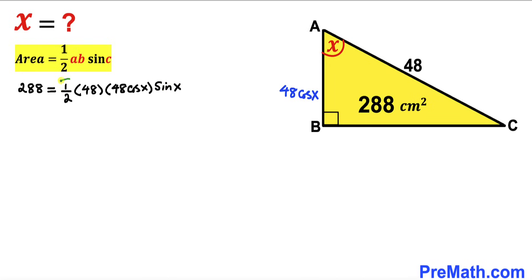Now we can see that one-half times 48 gives us 24. Let me tweak this: 48 could be written as 24 times 2. So this whole thing becomes 288 equals 24 times 24 times 2, and then times sine X cosine X.